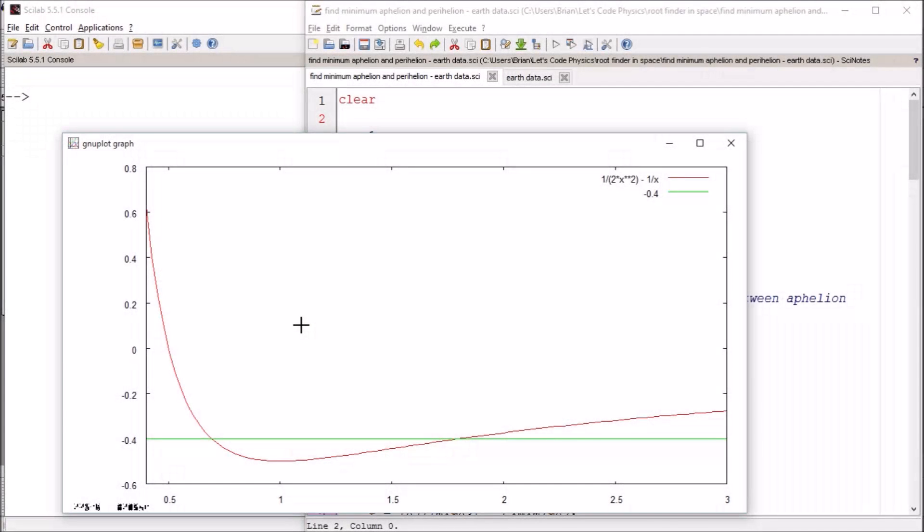Hello and welcome back to Let's Code Physics. This is episode five of our series on finding the aphelion, perihelion, and minimum of the orbit of a planet around a star. The orbit around a star is very special in that there's this attractive term that's due to gravity and a repulsive term that's due to conservation of angular momentum.